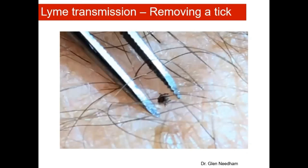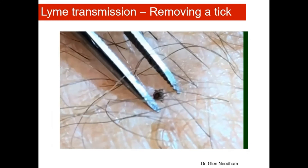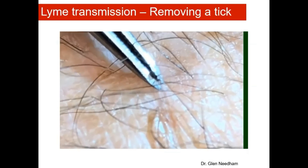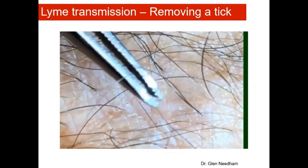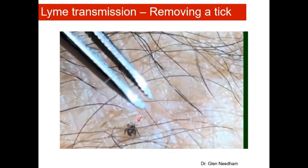Here is an excellent video provided by Dr. Glenn Needham in which he's removing a nymphal tick from his skin. You can see that he's grasping the tick with pointy tweezers and then pulling straight upward with steady, even pressure. You can actually see the mouth parts of the tick right here — in this case the mouth parts came out with the tick when it was removed. You can also get an appreciation of just how small these nymphal ticks are from this video.